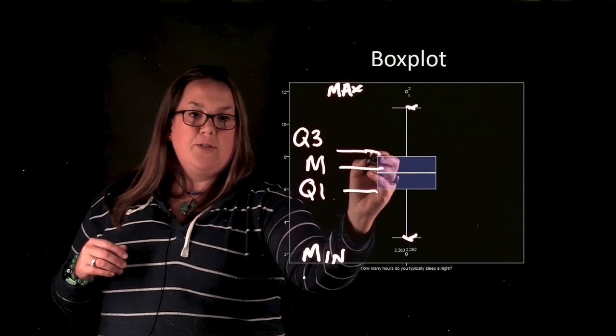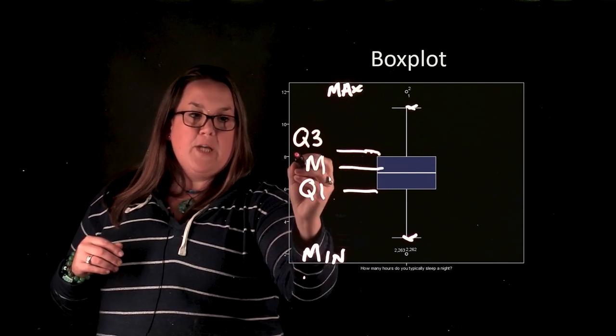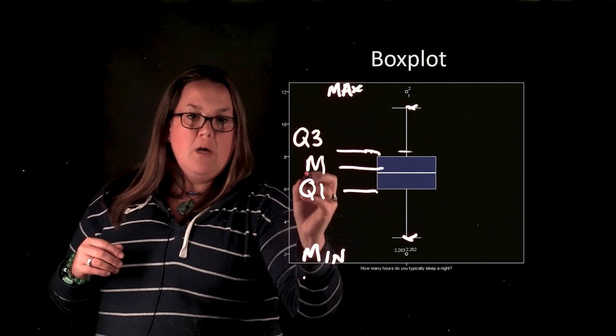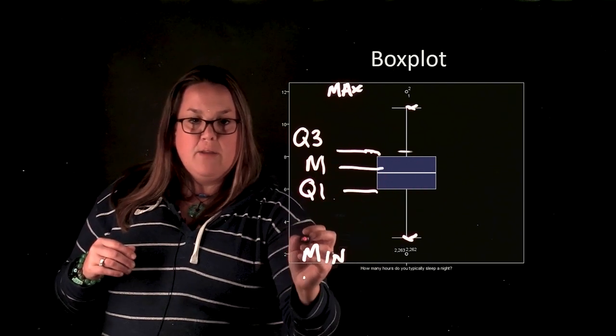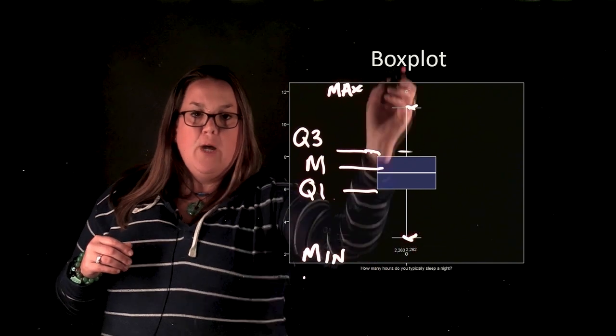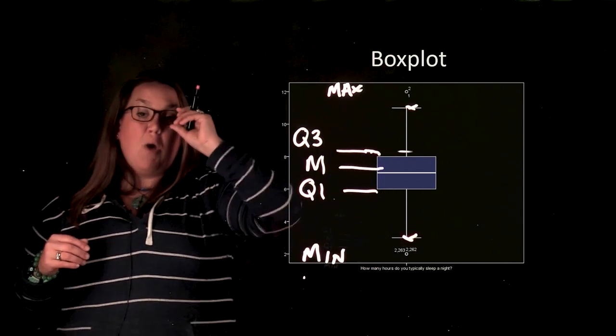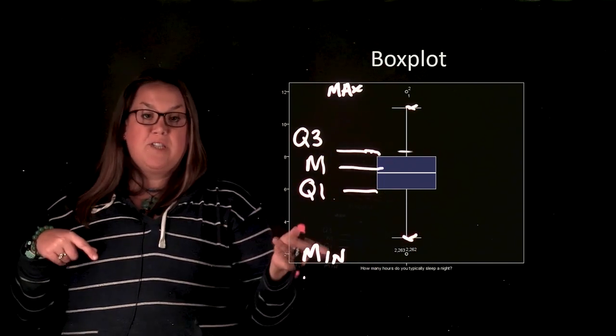So here essentially, and I didn't do that quite straight, but it looks like Q3 would probably be eight, the median would probably be seven, Q1 would be six, the minimum appears to be two, and then the maximum is at 12. That's the number of hours of sleep.